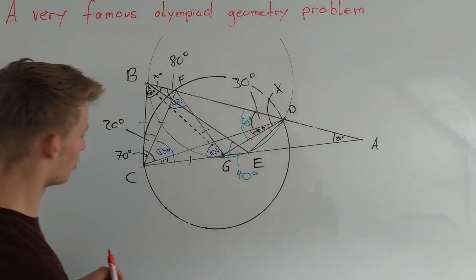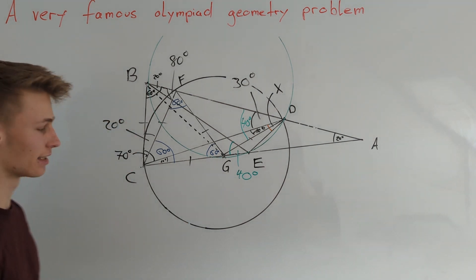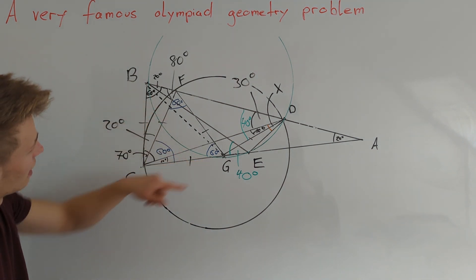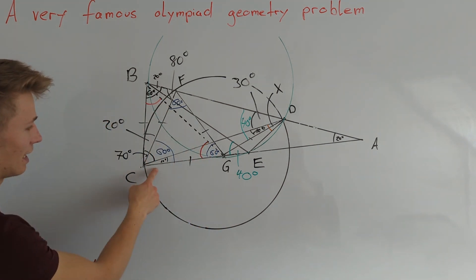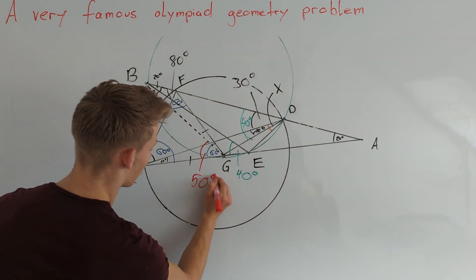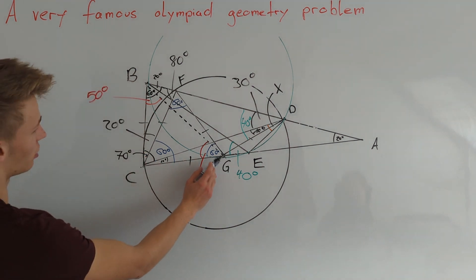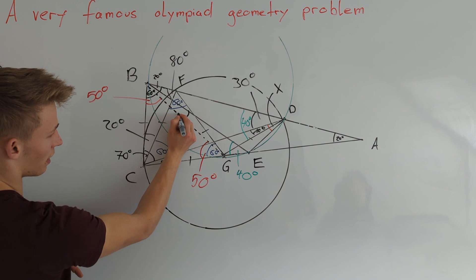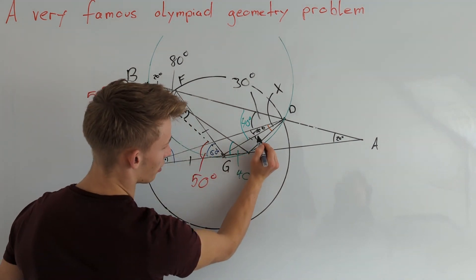Here we note that CG is equal to CB, and since angle GCB is equal to 80 degrees, we can calculate these two base angles, which are each equal to 180 degrees minus 80 degrees divided by 2. So these two angles are both equal to 50 degrees. Now we can calculate the angle GBE: this angle is equal to 60 degrees minus 50 degrees, so we have 10 degrees here, and therefore angle GDE is also equal to 10 degrees.